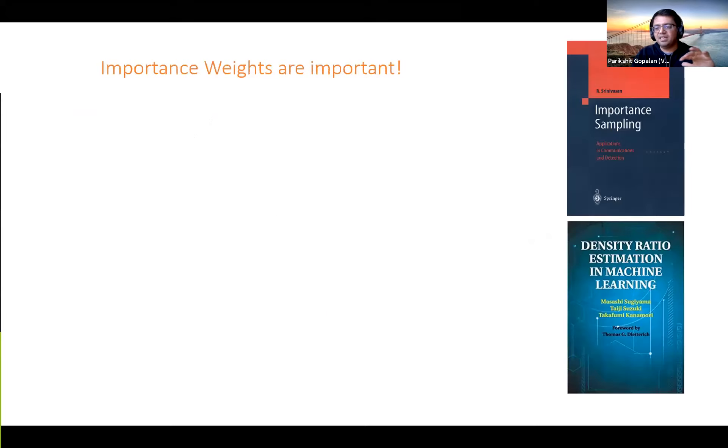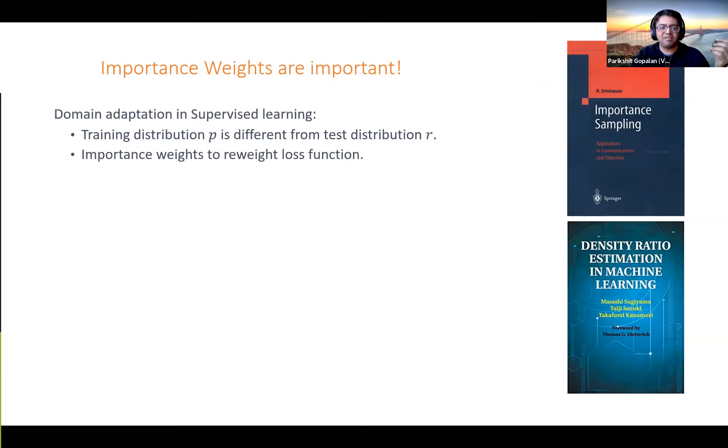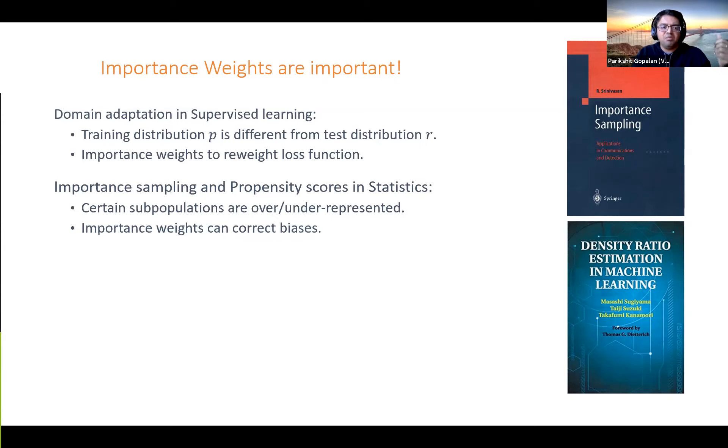Before I tell you that, let me spend one slide on the completely obvious fact that these importance weights are really important in machine learning, statistics, and beyond. There's this whole area of domain adaptation in supervised learning, where the prior P represents the training distribution and R represents the test distribution you'd actually like to make good predictions on. Often these can be different. There's a long line of work saying that importance weights are very useful because they might let you reweight the loss function to better represent reality.